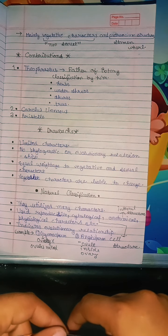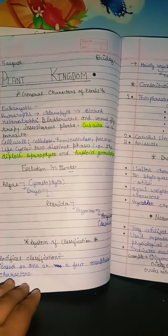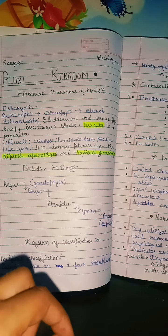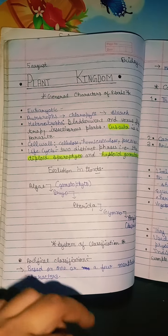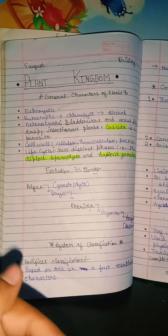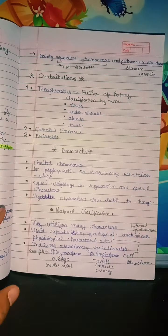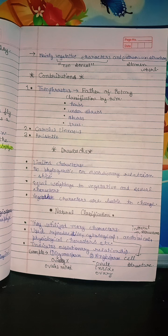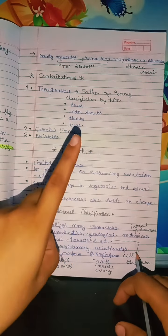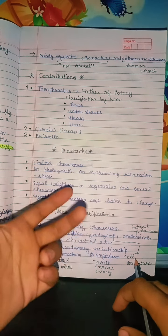Artificial classification is based on one or a few morphological characters. Mainly vegetative characters and androecium structure. These are non-sexual characters, mainly vegetative characters and androecium structure.